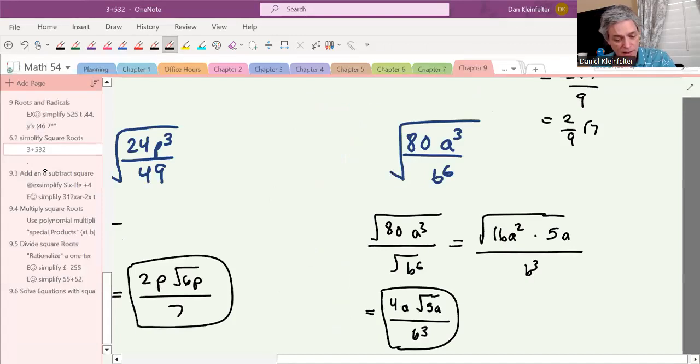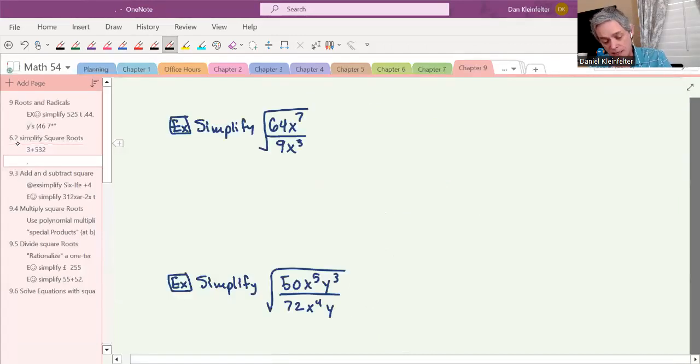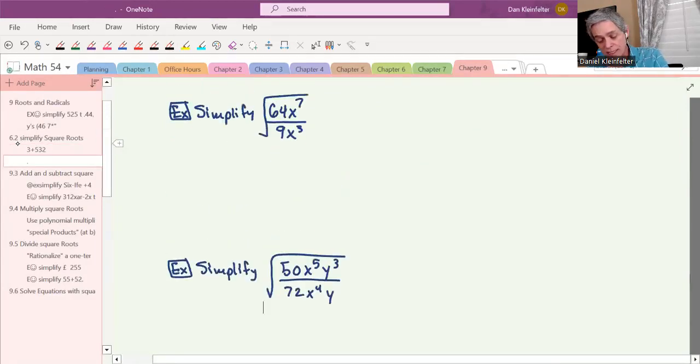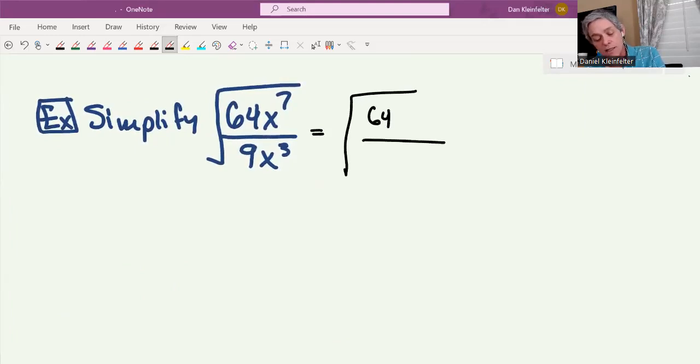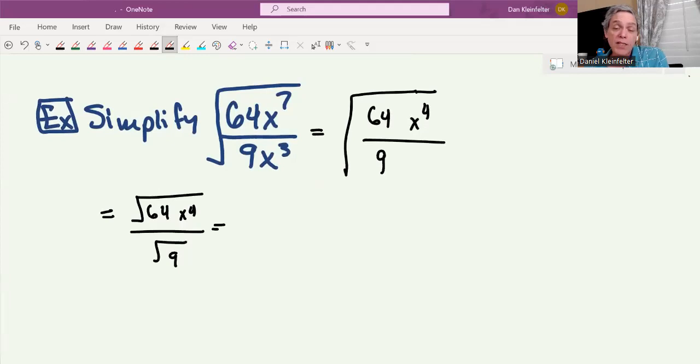So hopefully this is getting better with practice. Like a lot of things, almost everything in math, it gets better with practice. We just have two more examples, and then we're all done. So 64x to the seventh over 9x cubed. For this one, we'll simplify inside the radicand first. The number parts, there's no simplification, but x to the seventh divided by x cubed will give us x to the fourth. Now we'll split that into two separate radicals. That's the square root of 64x to the fourth divided by the square root of 9. The square root of 64x to the fourth is 8x squared, and the square root of 9 is 3.